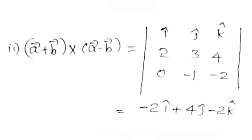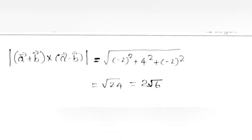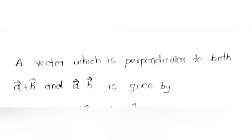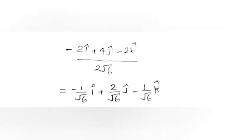Part 2. Find a unit vector perpendicular to both A + B and A − B. (A + B) × (A − B) = |i j k; 2 3 4; 0 −1 −2| = −2i + 4j − 2k. Magnitude = √(4 + 16 + 4) = √24 = 2√6. Unit vector = (−2i + 4j − 2k)/(2√6) = (−1/√6)i + (2/√6)j − (1/√6)k.